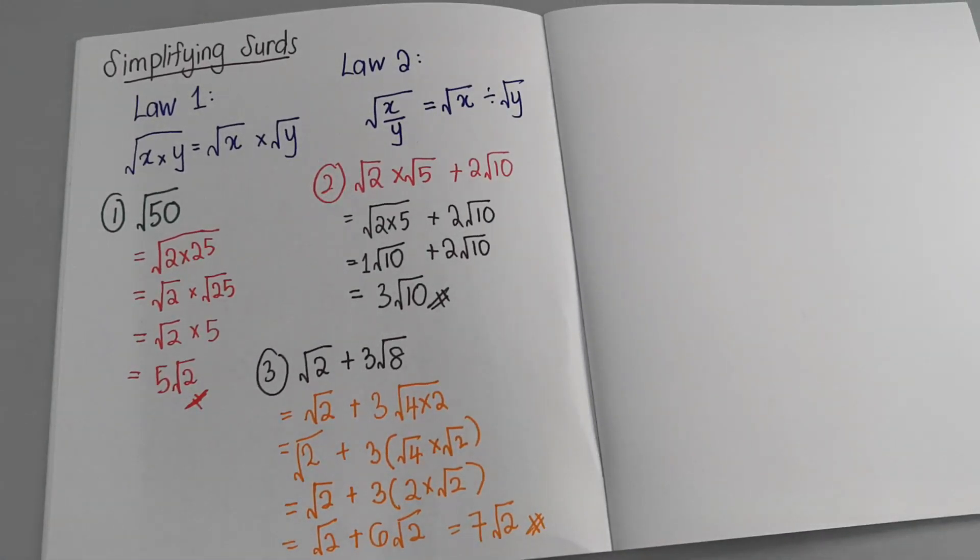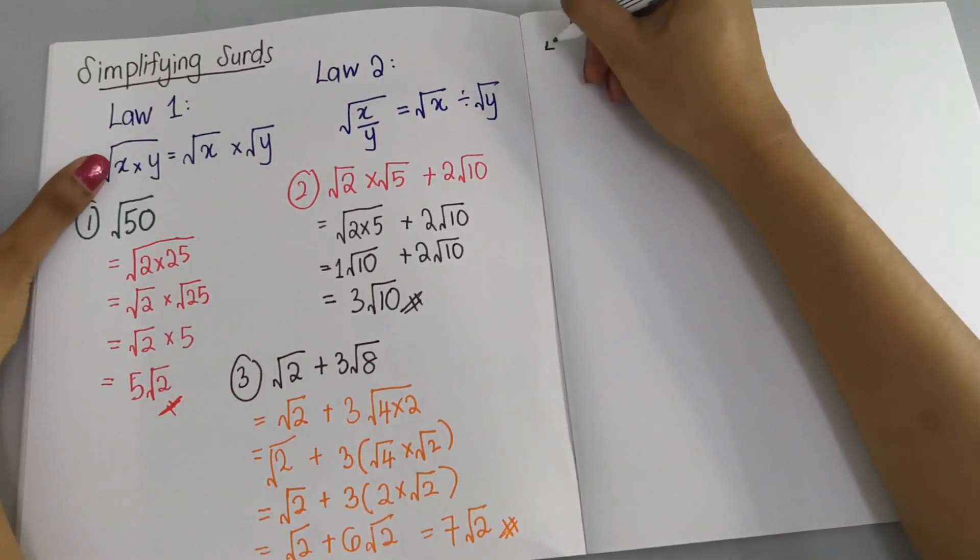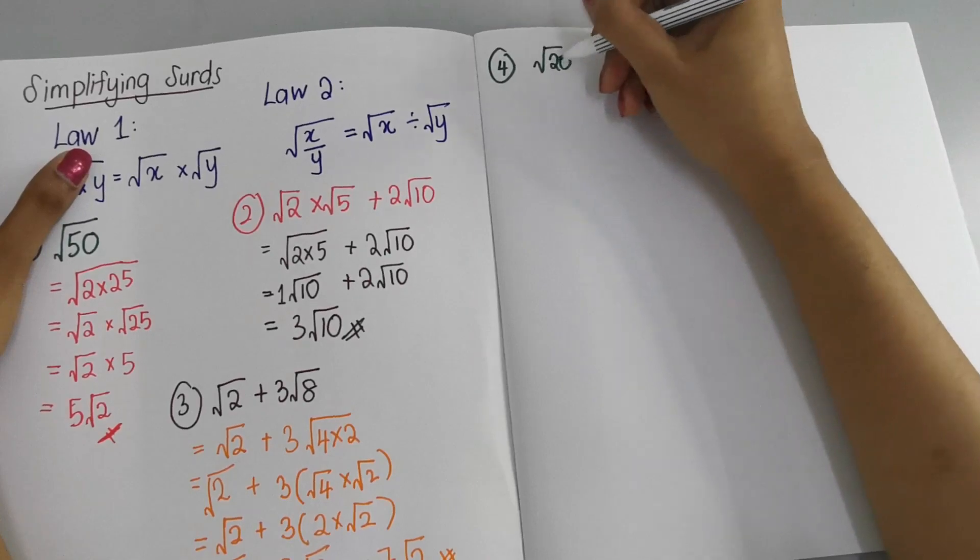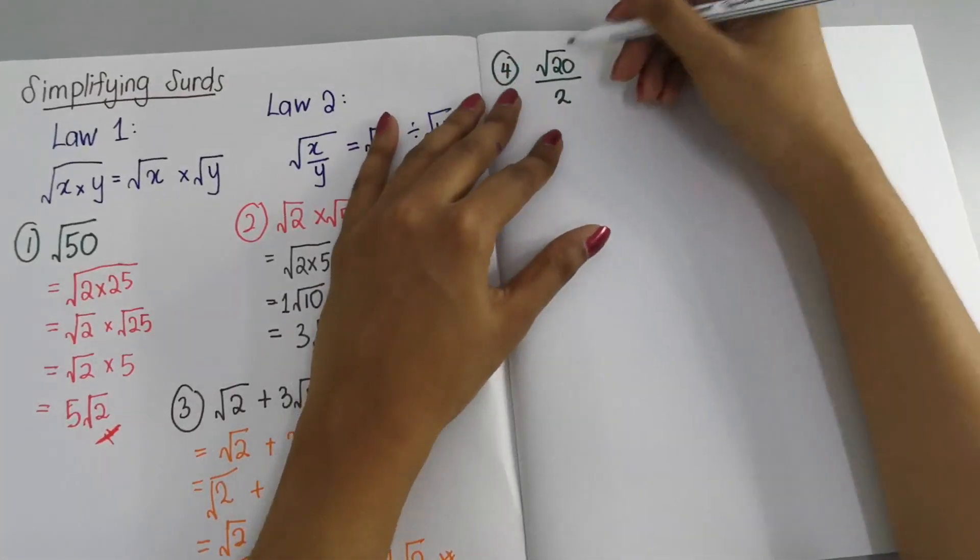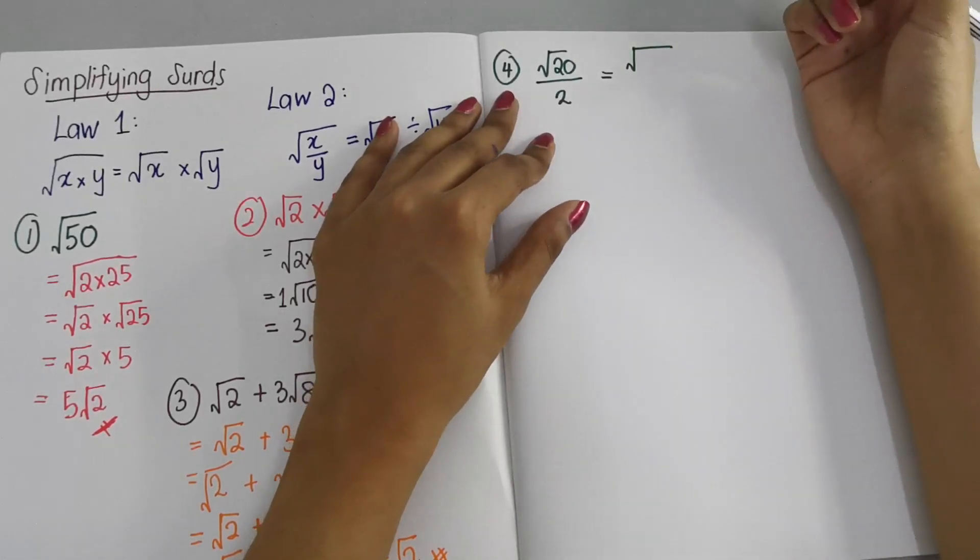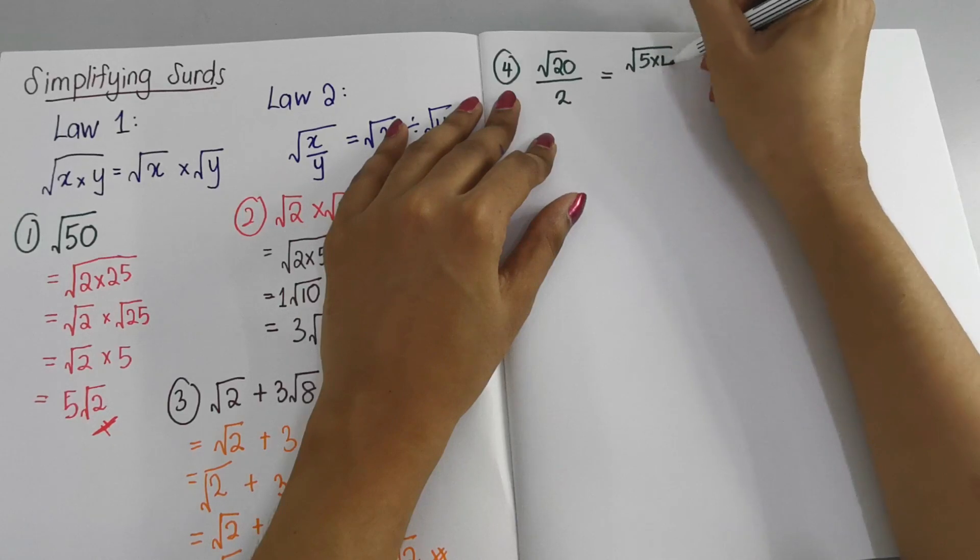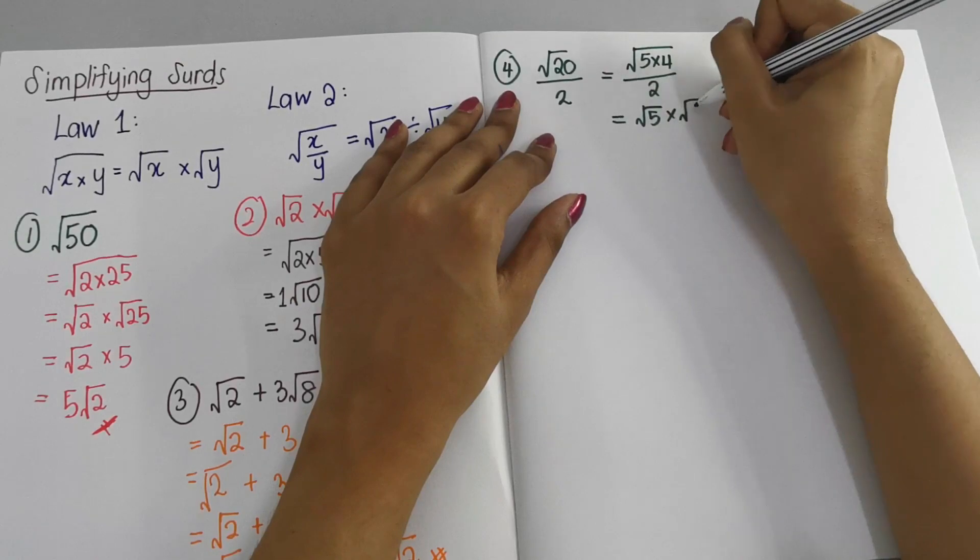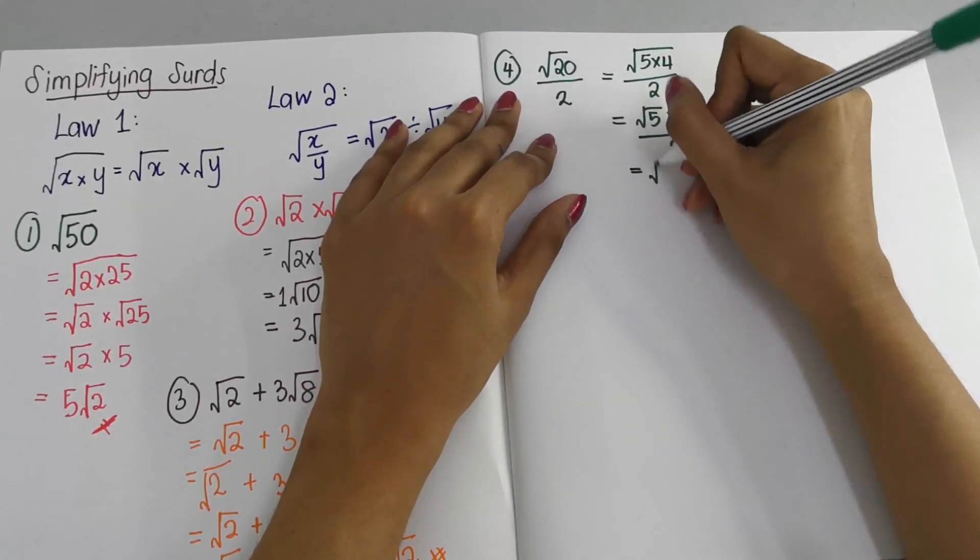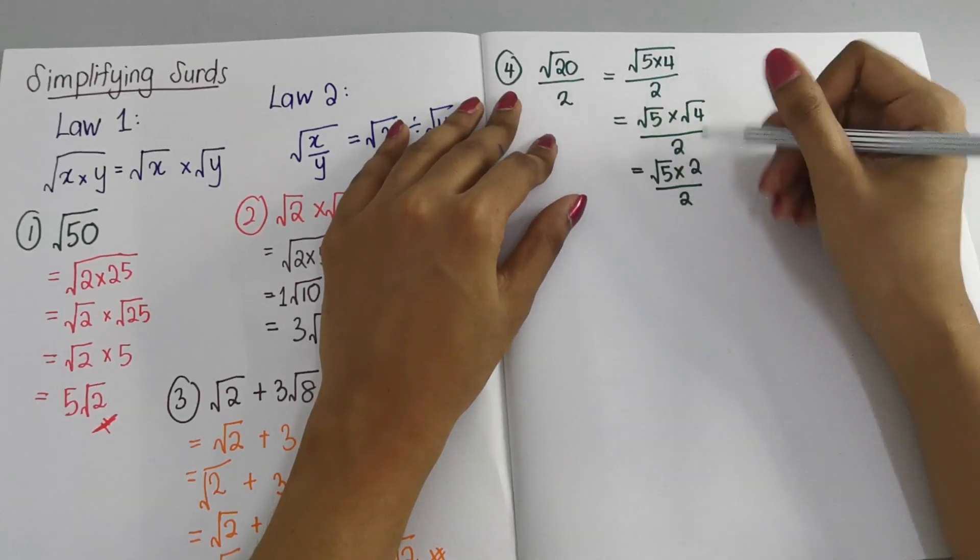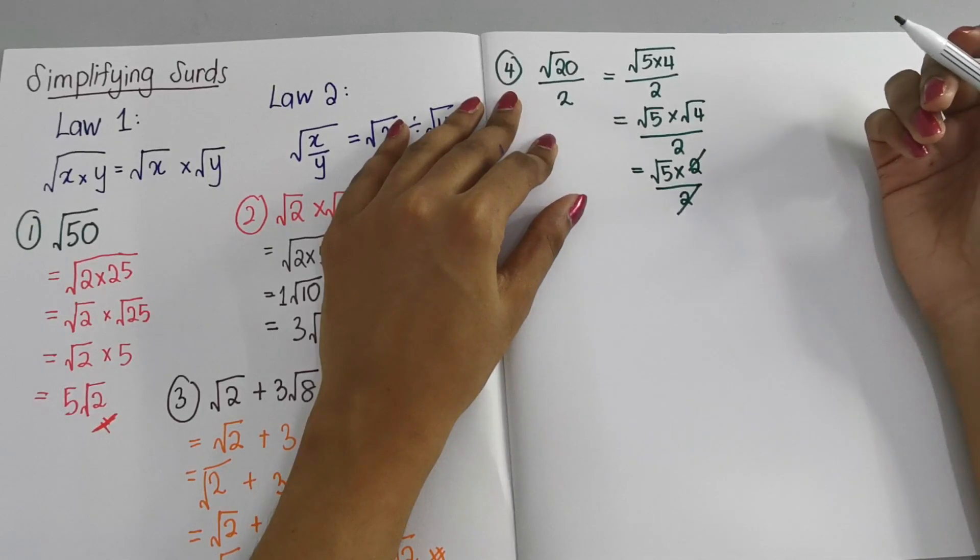I hope you guys are following. If you find I went too fast, you can always pause or rewind and watch again. Now let's look at another two more examples. For √(20/2), the surd is only on the numerator part. I'm going to find factors for 20, so it can be 5 × 4 over 2. That's √5 × √4 over 2, which is √5 × 2 over 2. The 2s cancel out, so it's only going to be √5.